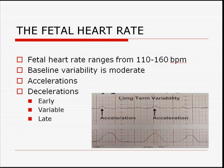The fetal heart rate changes that occur during labor are similar to what we've previously described for antepartum testing. The normal fetal heart rate ranges from 110 to 160 beats per minute with moderate variability and occasional accelerations. Because labor can stress the fetus, fetal heart rate decelerations are frequently seen. Decelerations are categorized into early, variable, and late types.